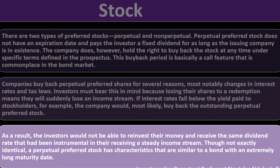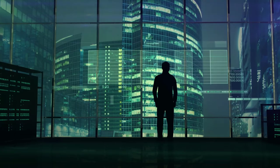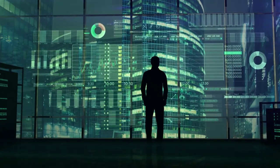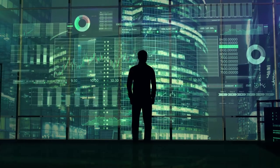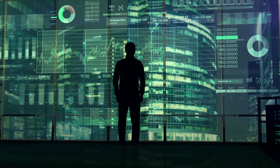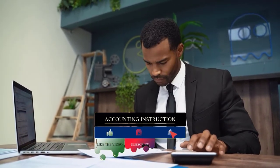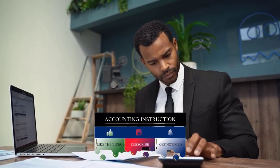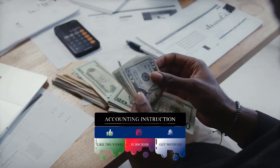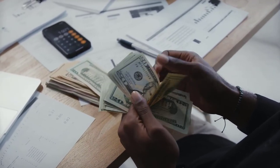Though not exactly identical, a perpetual preferred stock has characteristics similar to a bond with an extremely long maturity date. You can think of perpetual preferred stock as a stream of payments similar to interest payments on a bond, but without a maturity date — you can imagine them going on forever. That's how you might value the preferred stock: by present-valuing those payments. Payments far out into the future are very small in present value terms, so you can still arrive at a reasonable price.